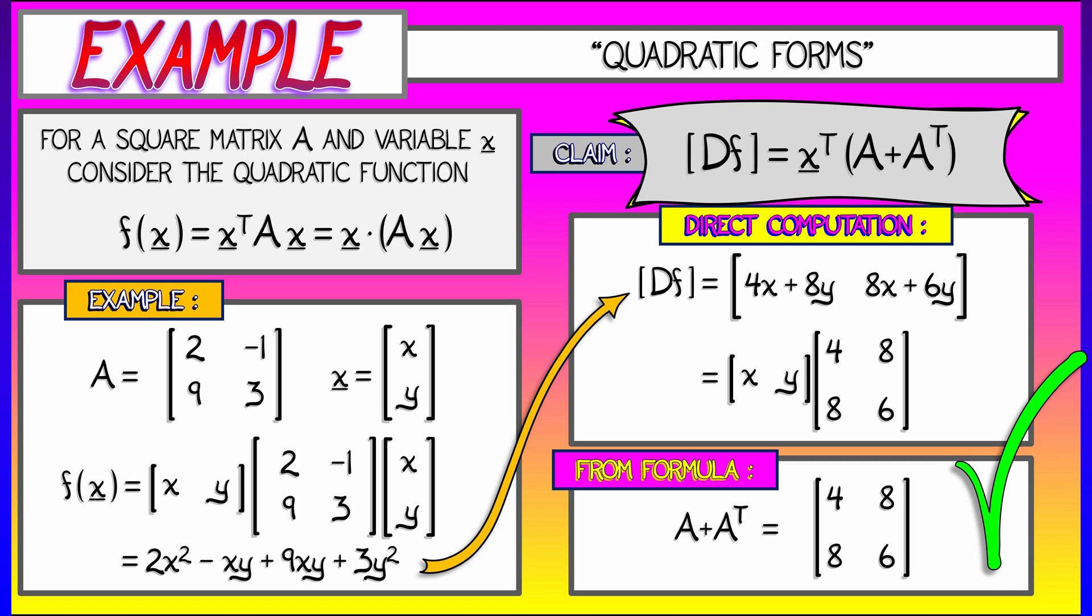And from the formula, computing A plus A transpose gives us precisely that matrix, 4, 8, 8, 6. You can check it. That works out. This quadratic formula for a derivative, really useful. Don't need to memorize it, but it's a great example.